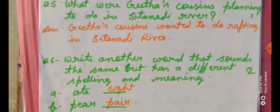Question number 5: What were Gita's cousins planning to do in Sita nadhi river? Answer: Gita's cousins wanted to do rafting in Sita nadhi river. Gita ke cousins Sita nadhi river mein rafting karna chahathe thae.